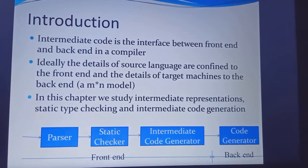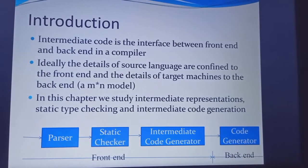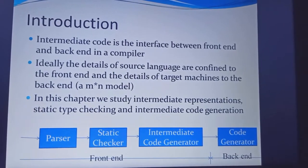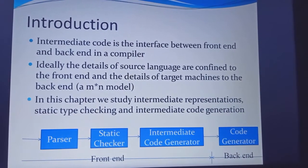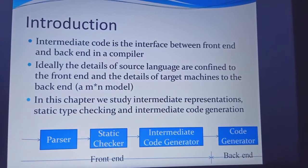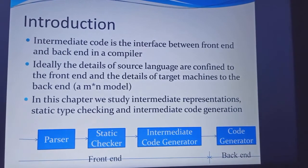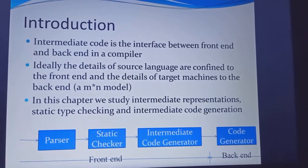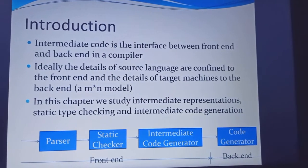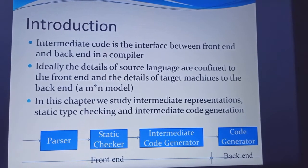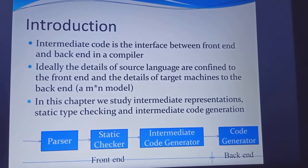Coming to the introduction: the intermediate code is the interface between the front end and back end of a compiler. The front end consists of the first three phases of compilation — lexical analysis, syntax analysis, and semantic analysis. After semantic analysis, we generate a parse tree with semantic meaning along with type checking, which is given to the intermediate code generator.